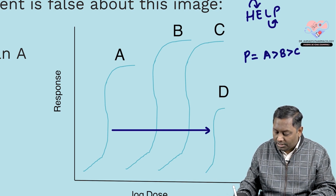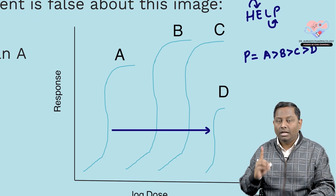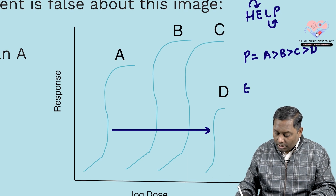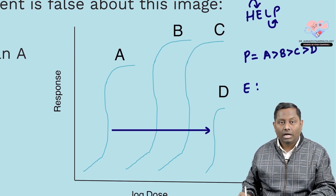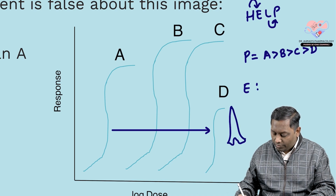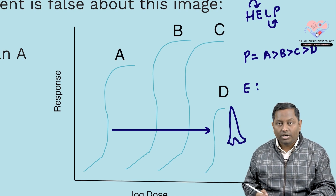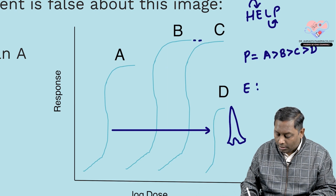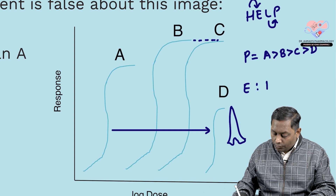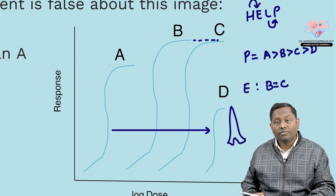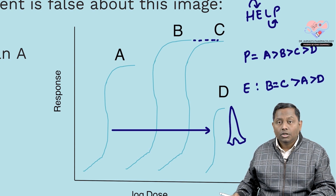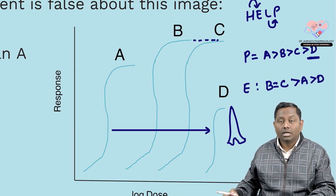Reading left to right, the potency order will be A, B, C, D. Potency deals with the lowest dose of a drug that can cause an effect. For efficacy, think of the Eiffel Tower — it's famous for its height. So look at the height of the curve, never the dose line. B is equally efficacious to C.